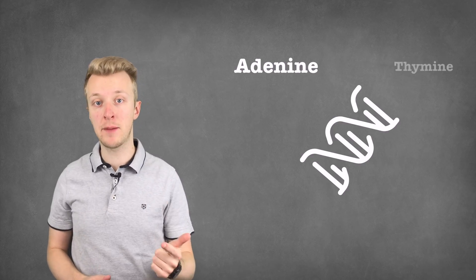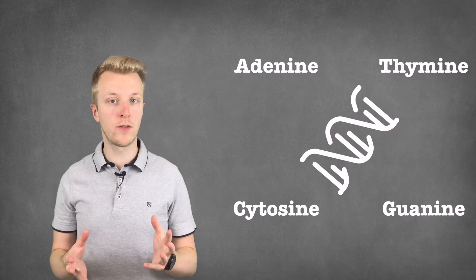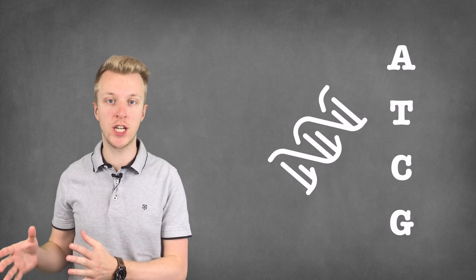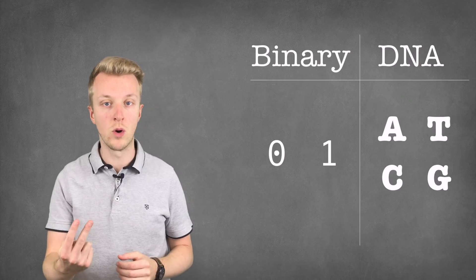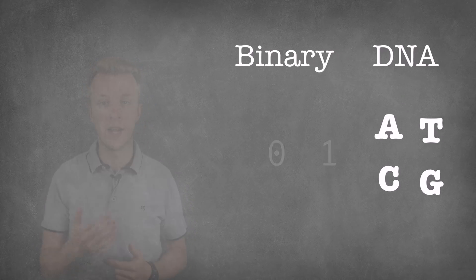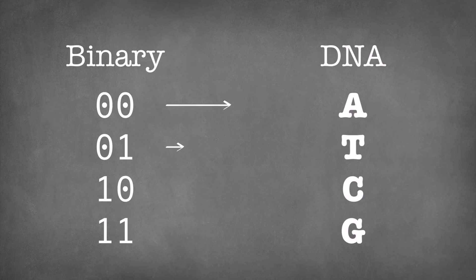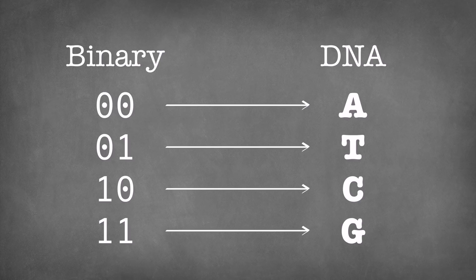DNA is made up of four components: adenine, thymine, cytosine, and guanine, also referred to as ATCG. This means that we have now four distinct values instead of two, so we have to rework our binary files. Instead of storing each zero or one individually, we store them in pairs of two, like this. Once we have that, we can encode the data into synthetic DNA. This is exactly like the real stuff, the only difference being that synthetic DNA is not stored inside a living cell.